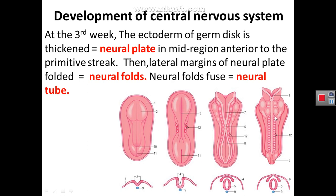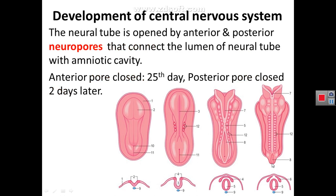The neural tube is opened from the front and from behind. The anterior and posterior openings of the neural tube are called neuropores and must be closed. The anterior neuropore will be closed on day 25, while the posterior neuropore will be closed on day 27, as everything anterior develops faster than the posterior.